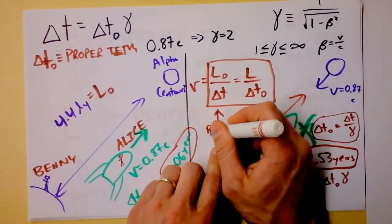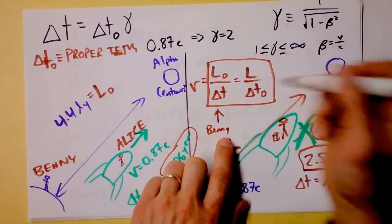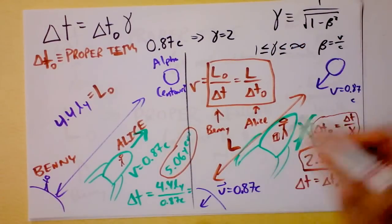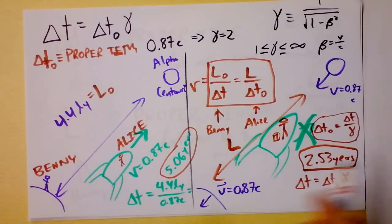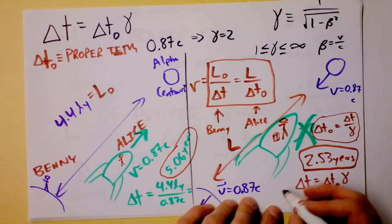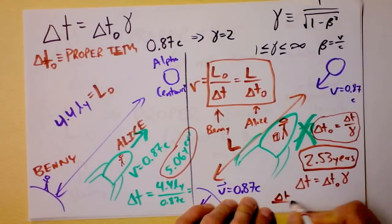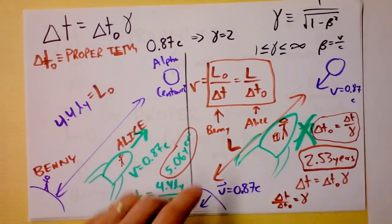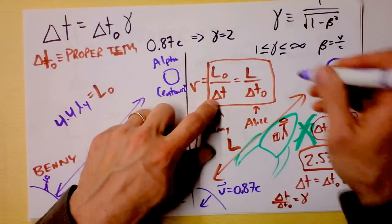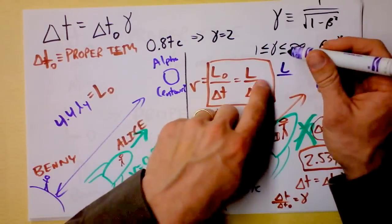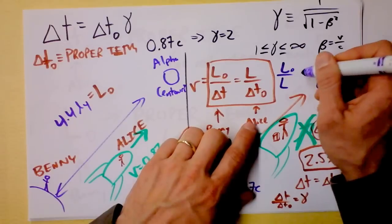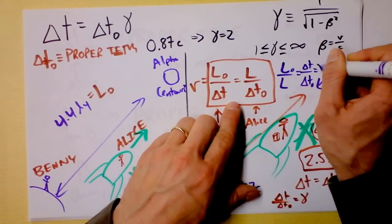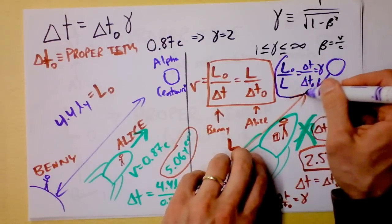However, Alice is going to measure a shorter distance. The ratio between L and L0 is very similar to the ratio between T and T0 because both of them give the speed. Benny and Alice will agree that Alice is moving at 87% the speed of light relative to Alpha Centauri. Alice just thinks Alpha Centauri is coming towards her, and Benny thinks that Alice is going towards Alpha Centauri. But the relative speed is the same, so I can set up this equation and say L0 over delta T. Benny's got L0, but he's got delta T. He's got the wrong time, but he's got the proper length. This is L0. And this length right here must be L, because it's not the same length.